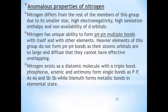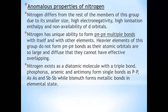Reactivity towards oxygen: all elements form two types of oxides, E2O3 and E2O5. Oxides of type E2O3 of nitrogen and phosphorus are acidic. Arsenic and antimony oxides are amphoteric — they show both acidic and basic behavior. The oxide of bismuth is basic.